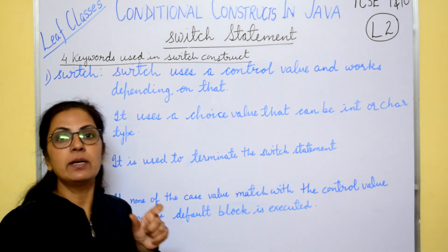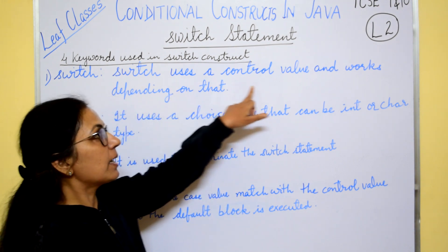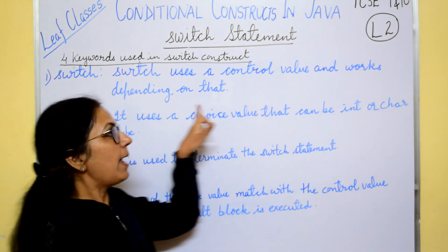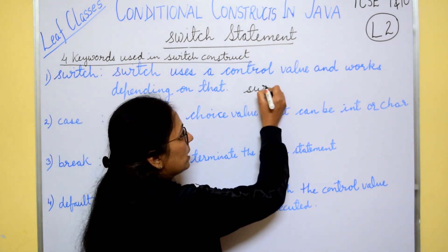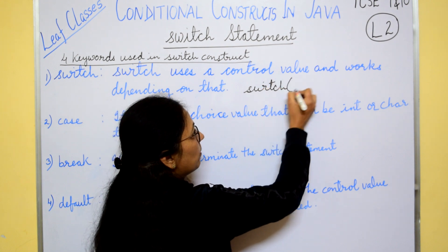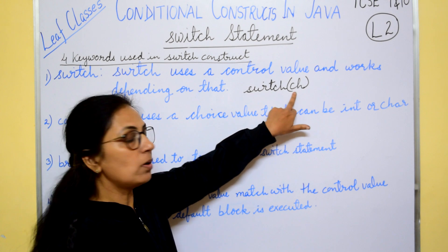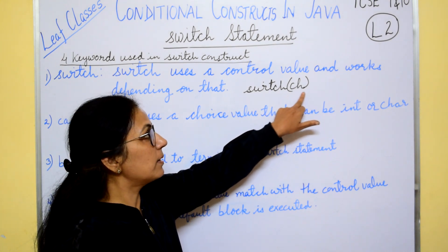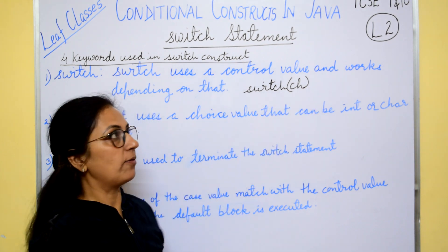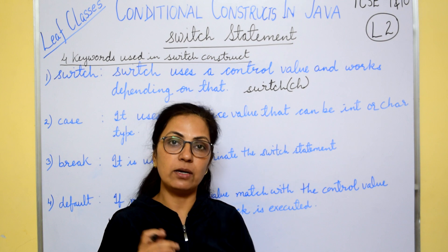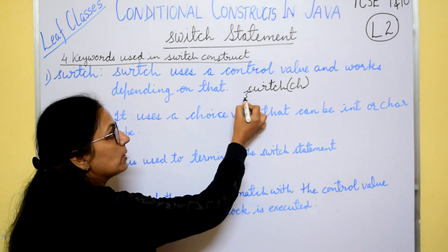The first keyword is switch, used at the beginning of the switch construct. It uses a control value and works depending upon that. For example, write switch(ch) — the control variable or value is written within the bracket after switch. There is no semicolon after that, and the entire switch block is written within curly braces.